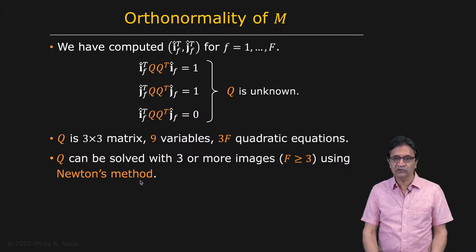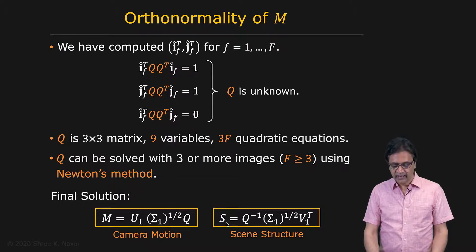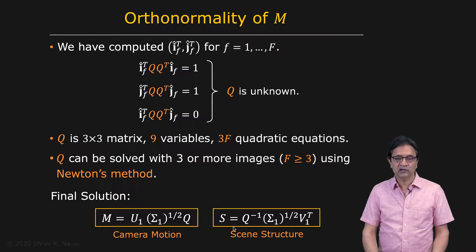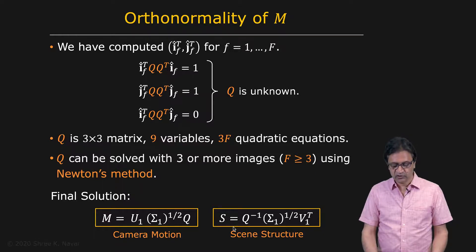Once we have found Q, we simply plug it back into the expressions for the camera motion matrix M and the scene structure matrix S, and our structure from motion problem has been solved.